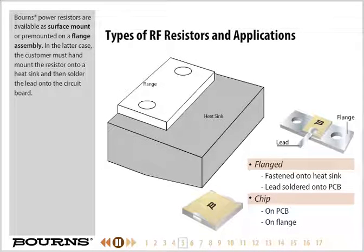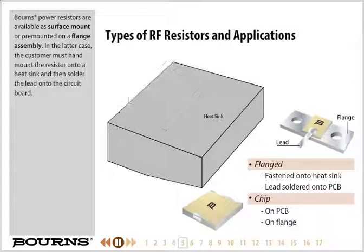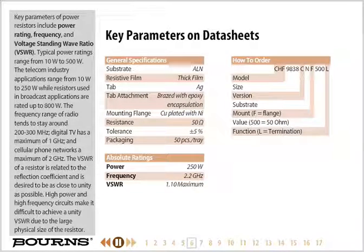Bourns power resistors are available as surface mount or pre-mounted on a flange assembly. In the latter case, the customer must hand mount the resistor onto a heat sink and then solder the lead onto the circuit board. Key parameters of power resistors include power rating, frequency, and voltage standing wave ratio, or VSWR. Typical power ratings range from 10 watts to 500 watts. Telecom industry applications range from 10 to 250 watts, while broadcast applications are rated up to 800 watts. The frequency range of radio stays around 200 to 300 megahertz, digital TV has a maximum of 1 gigahertz, and cellular phone networks a maximum of 2 gigahertz. The VSWR is related to the reflection coefficient and is desired to be as close to unity as possible. High power and high frequency circuits make it difficult to achieve a unity VSWR due to the large physical size of the resistor.